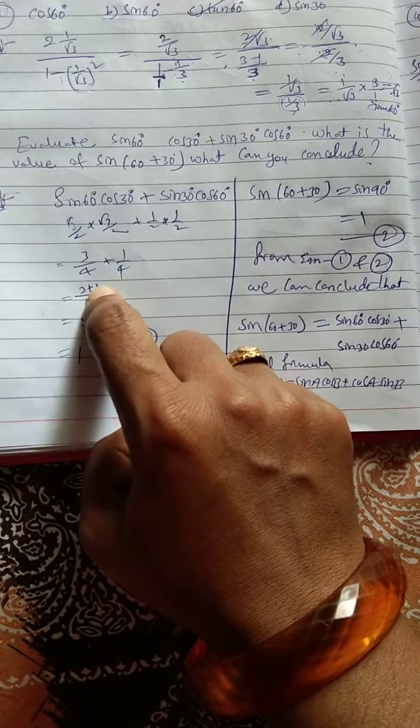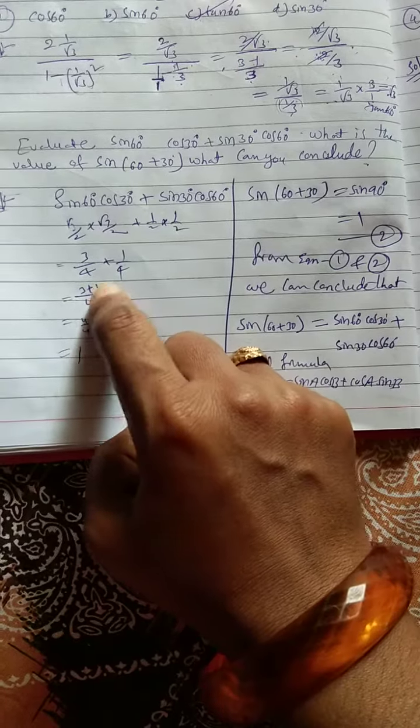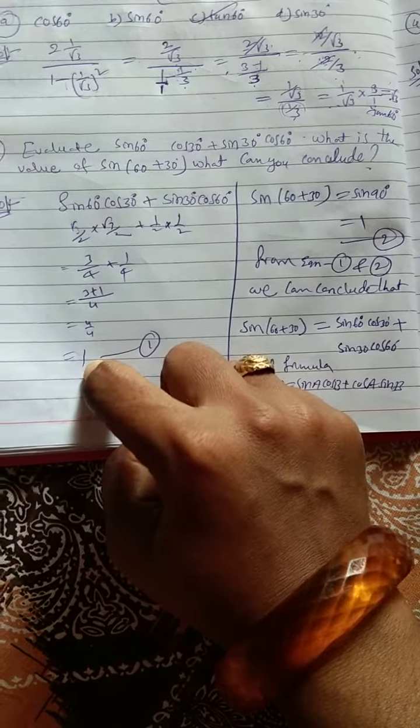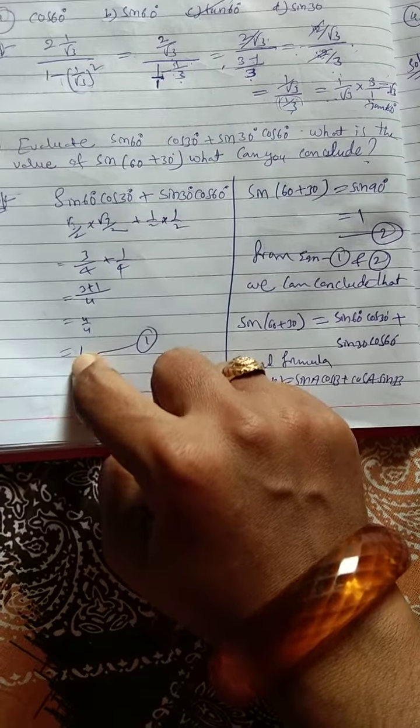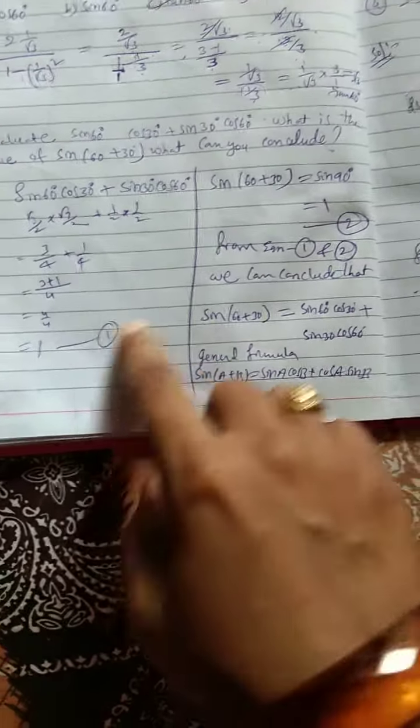Now take LCM for these two values. 4 is the LCM. Now 3 plus 1, 4 by 4. 3 plus 1 is 4, 4 by 4 means 1. So equal to 1. Let us say equation 1.